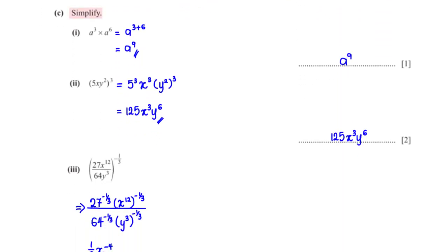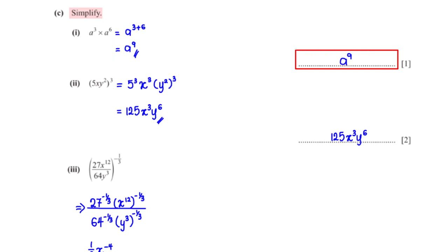Simplify a raised to the power 3 times a raised to the power 6. Based on the laws of indices, since the bases are equal, we add the powers. This gives us a raised to the power 3 plus 6. Since 3 plus 6 is 9, the final answer is a to the power 9.